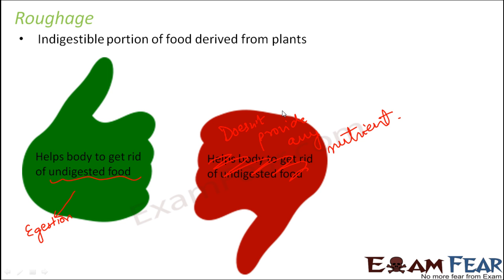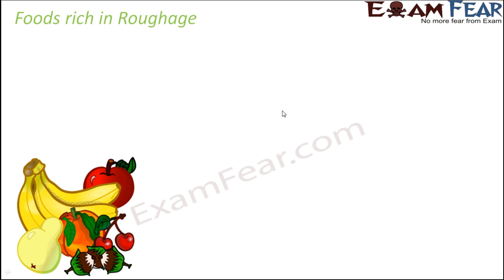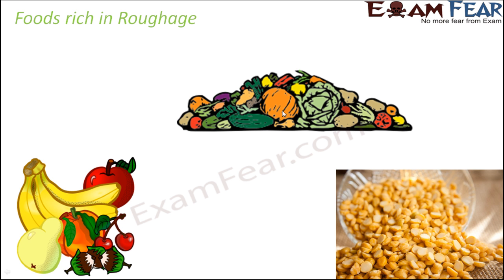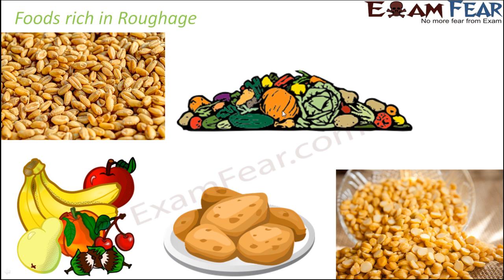Roughage has both advantages and disadvantages, but we need to include roughage in our diet. Otherwise, the undigested food doesn't get out of our body easily, which creates indigestion problems. Some food items rich in roughage are fruits, vegetables, lentils, potatoes, and wheat. Mostly fruits and vegetables are very rich in roughage.